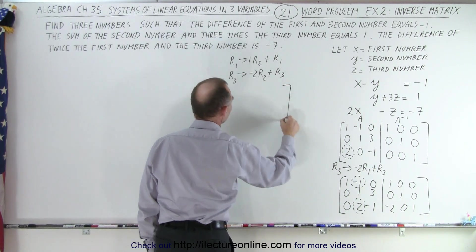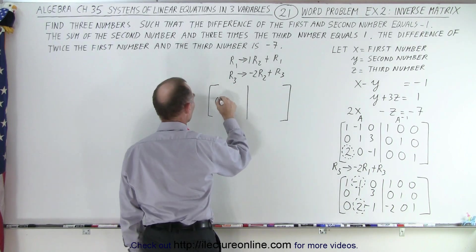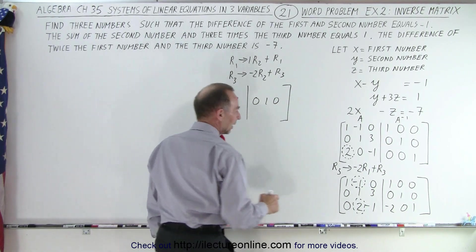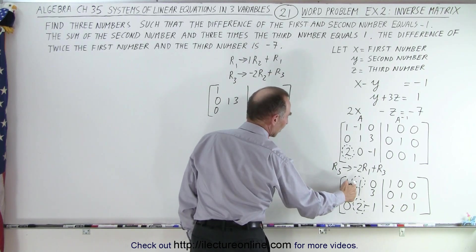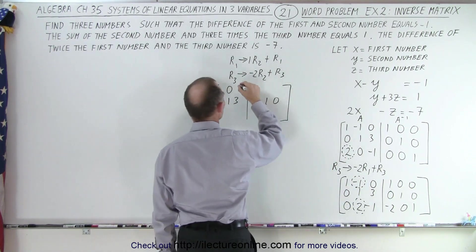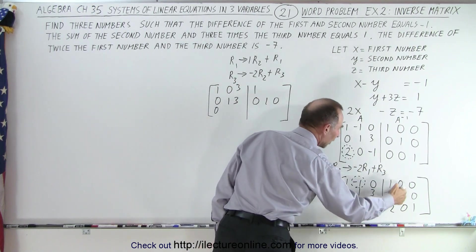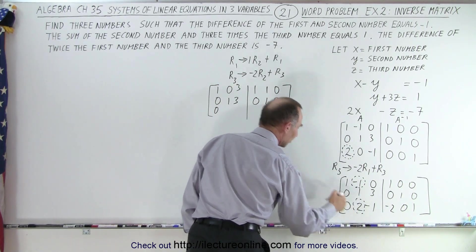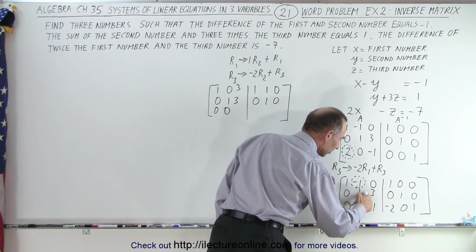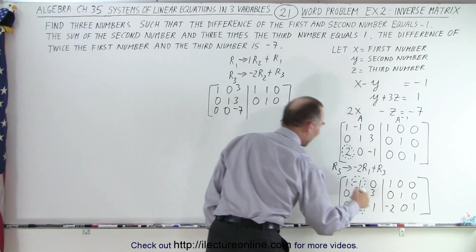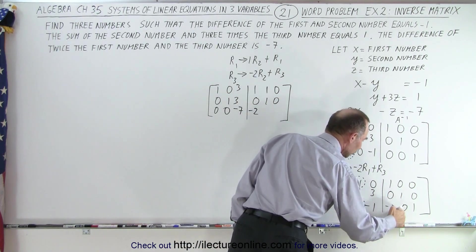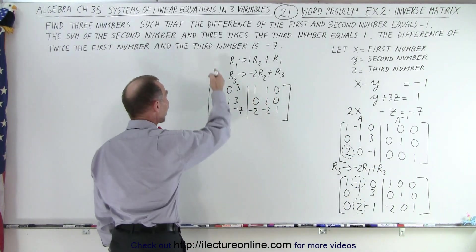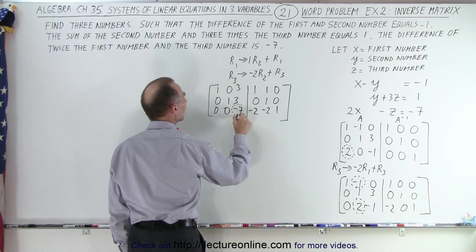The row that doesn't change is the second row, so I get 0, 1, 3 and 0, 1, 0. On the first row: 1 times R2 added gives me 0; 1 times 3 added to 0 gives me 3; 1 times 0 added to 1 gives me 1; 1 times 1 added to 0 gives me 1; and 1 times 0 added to 0 gives me 0. For the third row: negative 2 times this added to this gives me 0; negative 2 times 3 is negative 6, added to negative 1 is negative 7; negative 2 times 0 added to negative 2 is negative 2; negative 2 times 1 is negative 2 added to 0 is negative 2; and negative 2 times 0 added to 1 gives me 1. The second column is now 0, 1, 0.